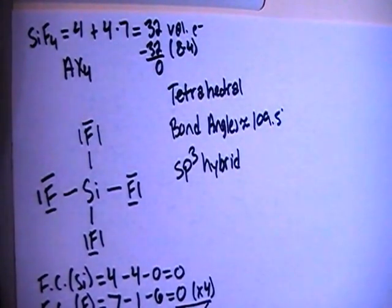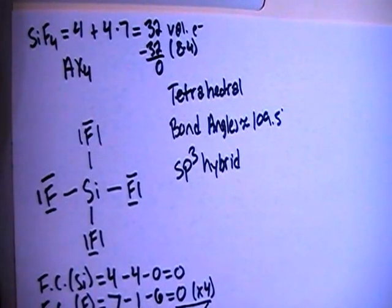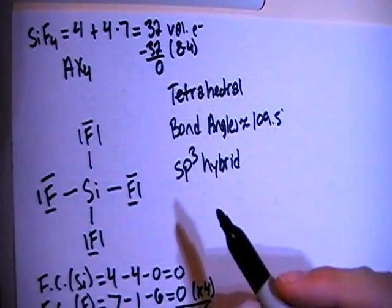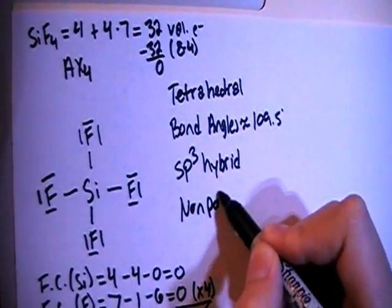And then in terms of polarity, because all of the surrounding atoms are all the same kind of atom, they're all fluorines, all of their dipole moments will cancel each other's out which will result in an overall non-polar compound.